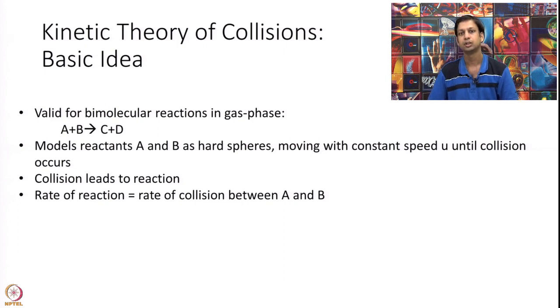Let us come to this kinetic theory and what is the basic idea. What is our model? How are we going to calculate this rate constant? First thing, this model is only for bimolecular reactions, that is there are 2 reactants A plus B. This is on the elementary step. I have A and B, they are reacting together to give me some products.